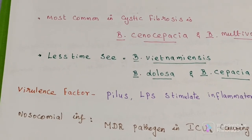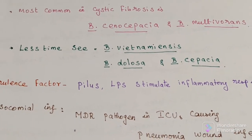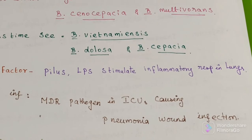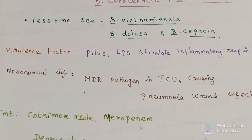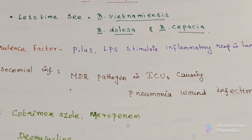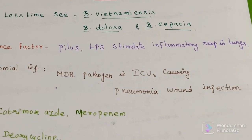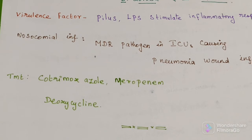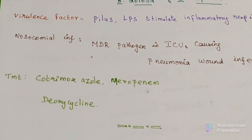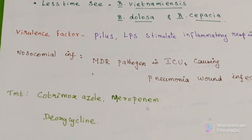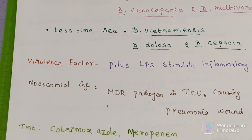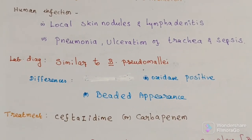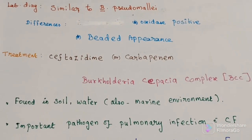Virulence factors of Burkholderia cepacia complex include flagella and LPS, which stimulate an inflammatory response in the lungs. It is a multi-drug resistant pathogen in the ICU, causing pneumonia and wound infection as nosocomial infections. Treatment involves cotrimoxazole, meropenem, and doxycycline. This concludes the discussion on the third species, Burkholderia cepacia complex.